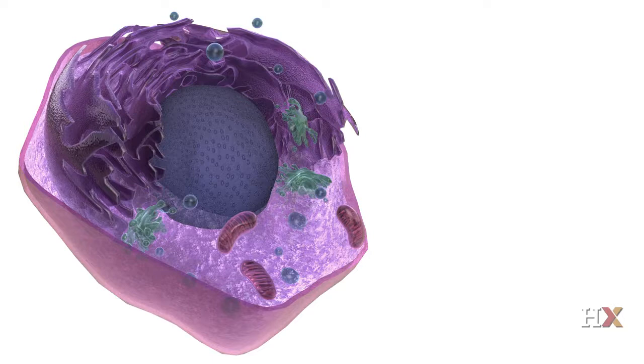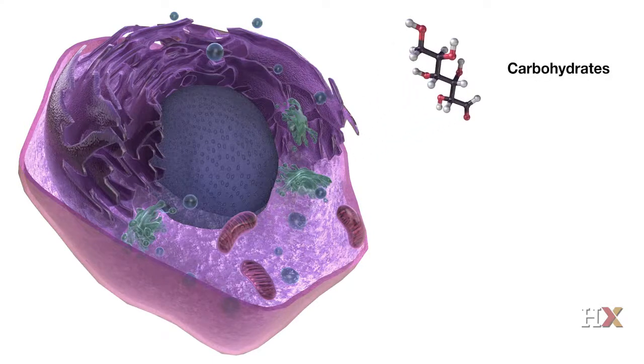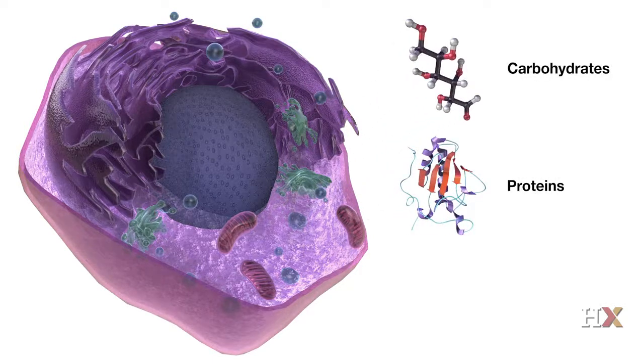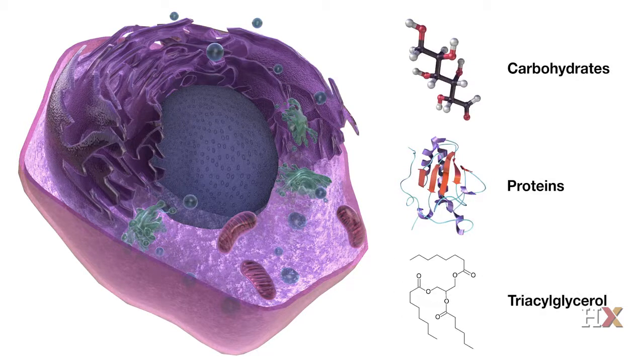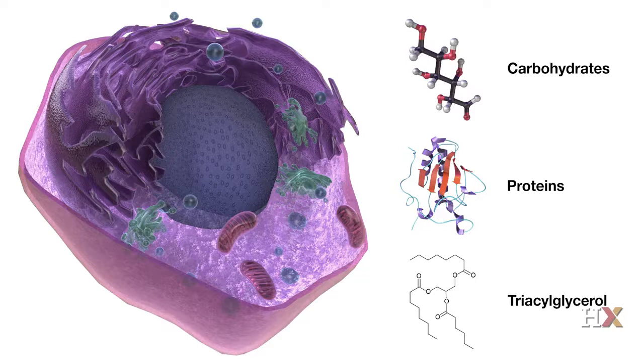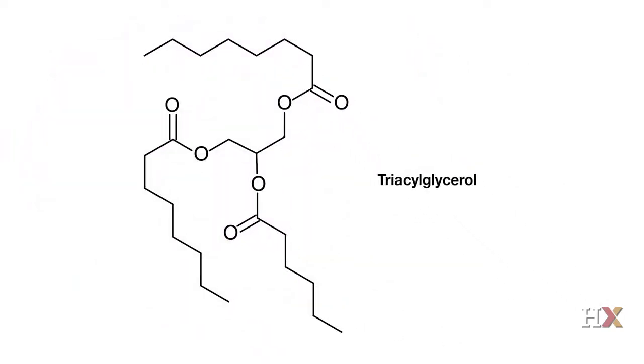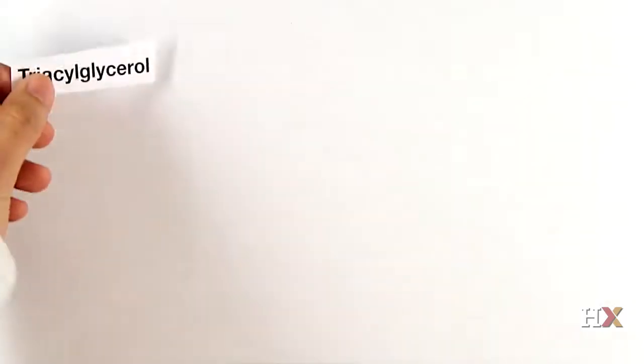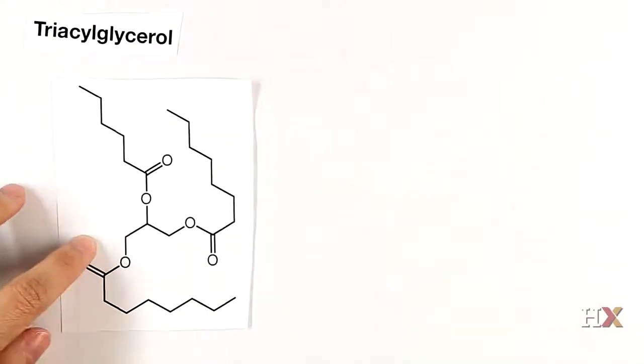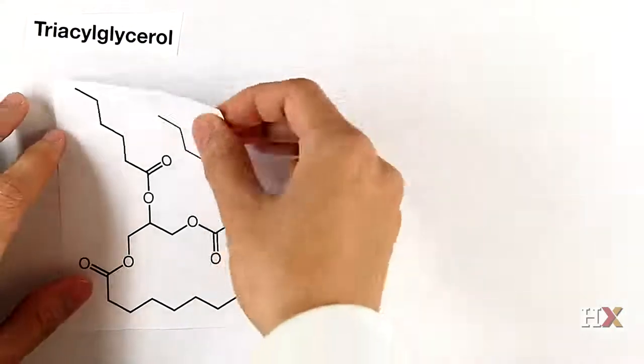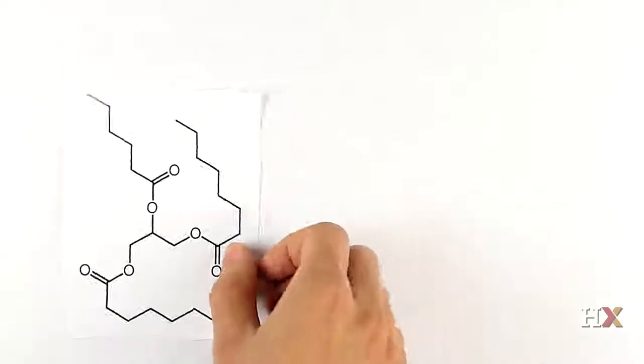So, cell uses different types of fuel molecules, carbohydrates, sometimes proteins, and a form of lipids called triacylglycerol. As Cathy will show you, the complicated name actually reflects the structure of the lipid. Right. The name triacylglycerol can be broken up into these parts. Tri, acyl, and glycerol.